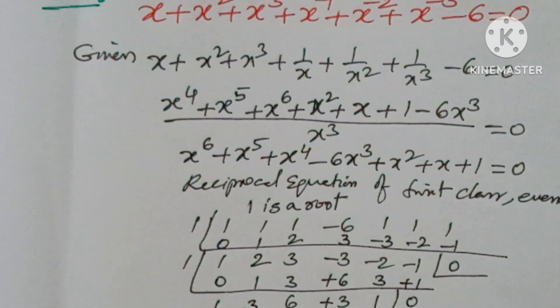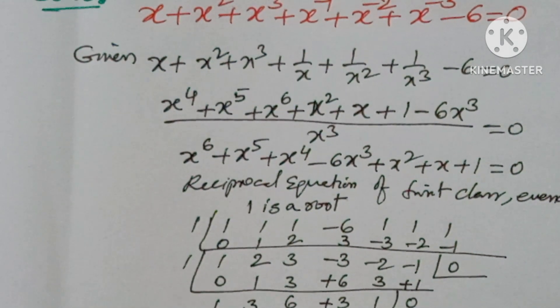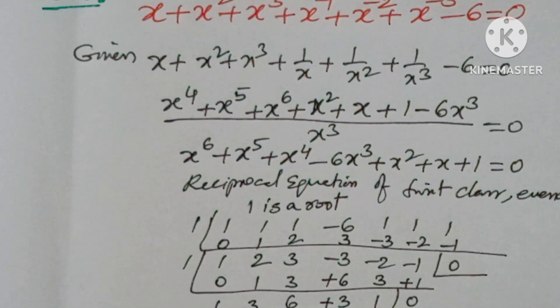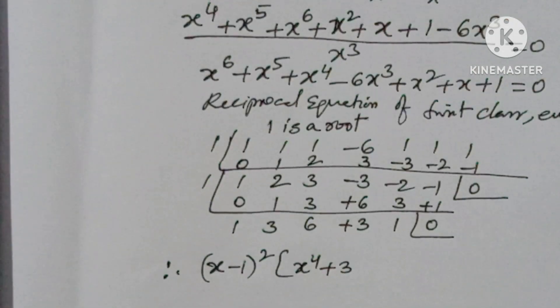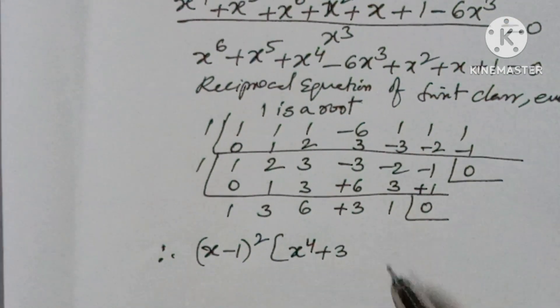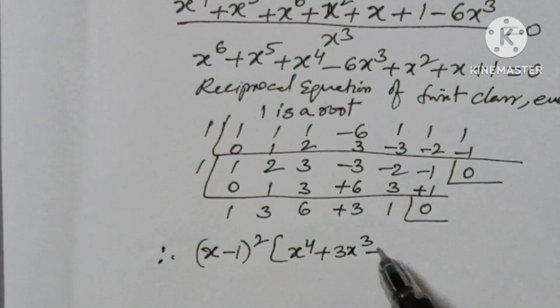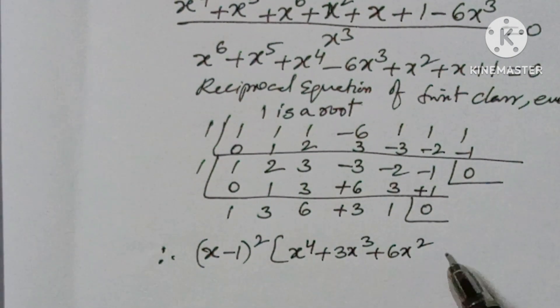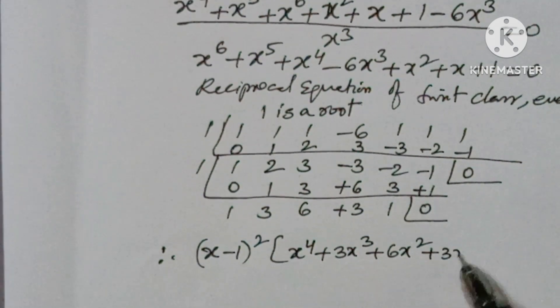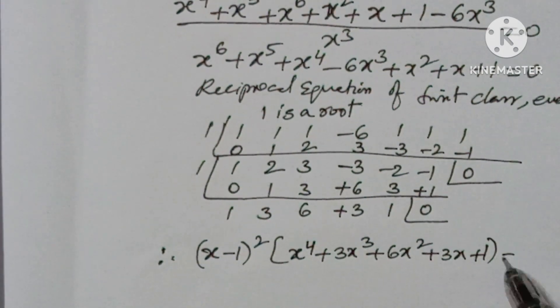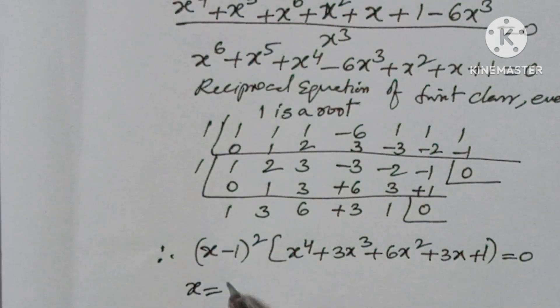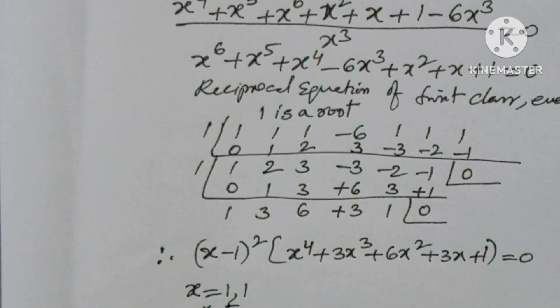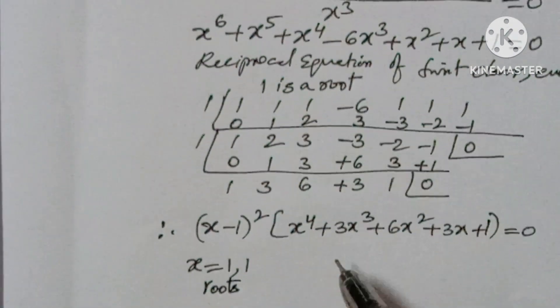Therefore, what you will get here: (x minus 1) squared times (x to the power of 4 plus 3x cubed plus 6x squared plus 3x plus 1) equals 0. So x equals 1, 1 are roots. You have to find the remaining 4 values.